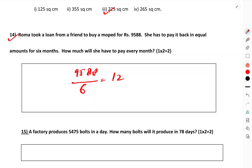Continuing the division: 6 into 6 is 36, 6 into 35 gives 5 remainder 5, 6 into 58 gives 9 remainder 4, 6 into 48 is 8. So the monthly payment is 48 rupees per month.